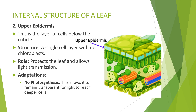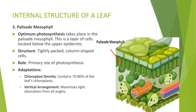3. Palisade mesophyll: the palisade mesophyll is where most photosynthesis occurs. This is a layer of cells located below the upper epidermis. These tightly packed, column-shaped cells contain a high density of chloroplasts, maximizing light absorption. The palisade mesophyll is the primary site of photosynthesis.